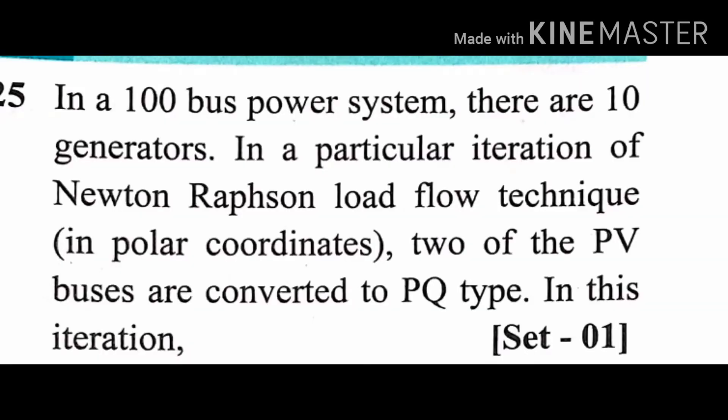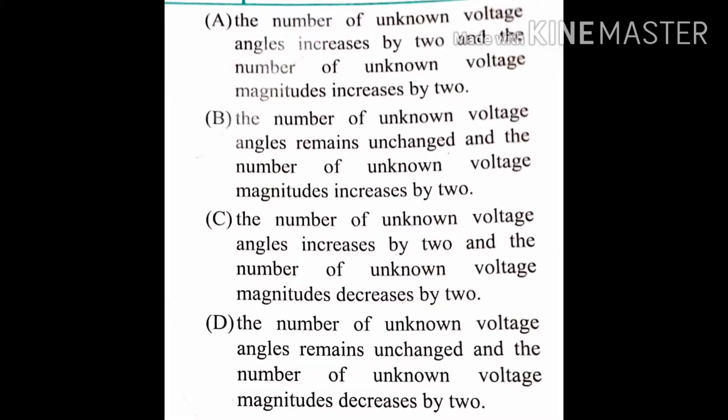Another question: In a 100-bus power system there are 10 generators. In a particular iteration of Newton-Raphson load flow in polar coordinates, two PV buses are converted to PQ type. The question is about the effect on unknown voltage angles and magnitudes — whether they increase, decrease, or remain unchanged.